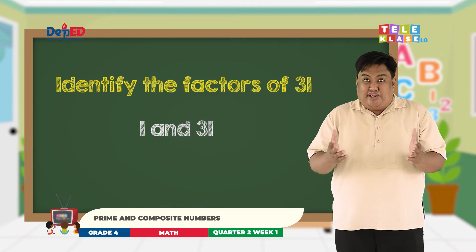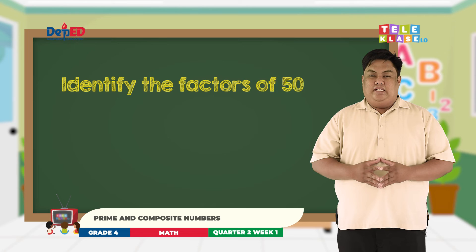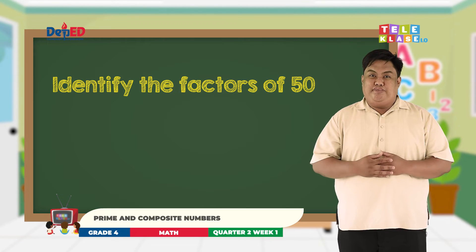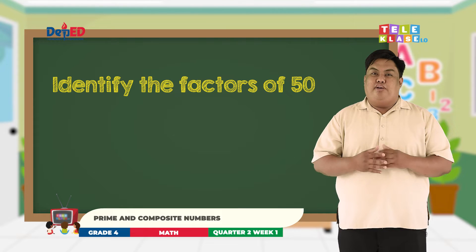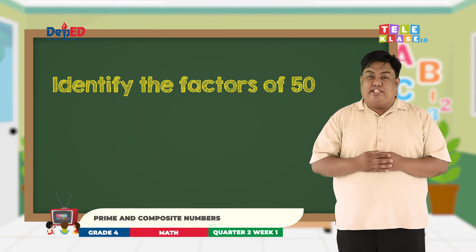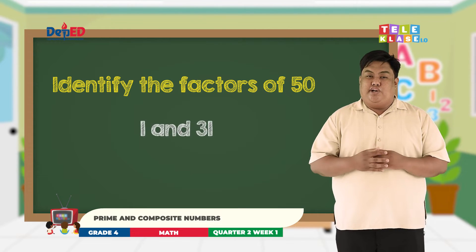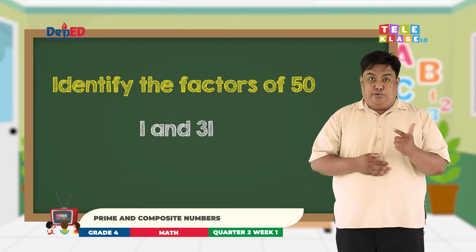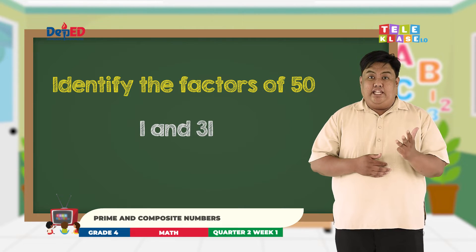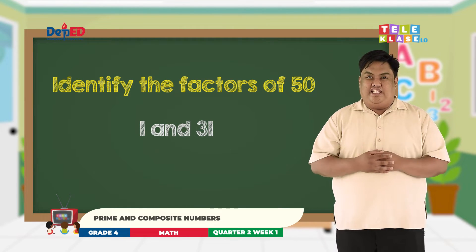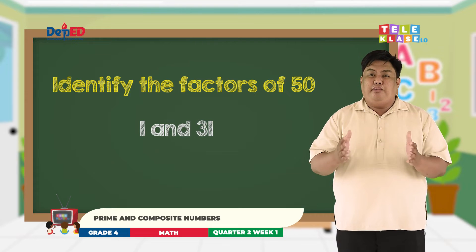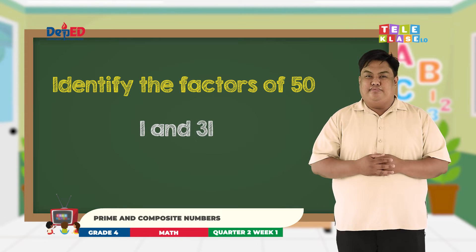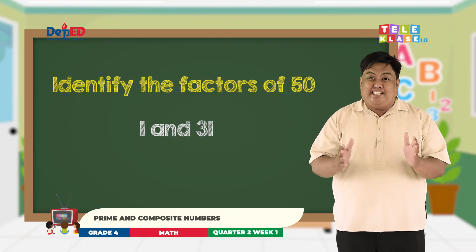Do you want another example? Next, what are the factors of 50? Very good! You are correct. The factors are 1, 2, 5, 10, 25, and 50. Now how many factors does it have? Very good! It has 6 factors.